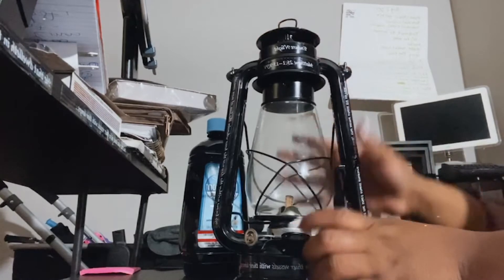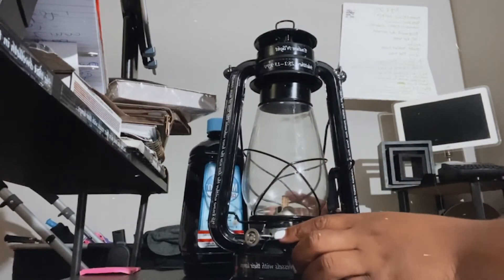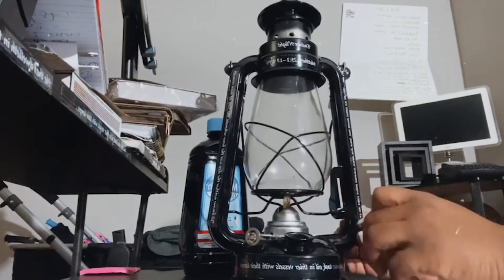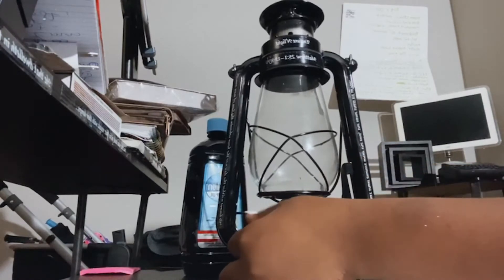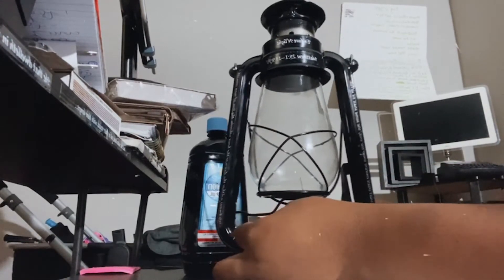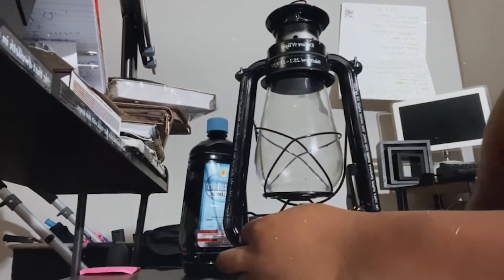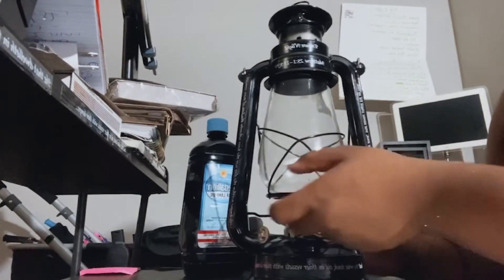And now it's time to light our lamp. So we'll expose the wick again. You want your wick to be very low when you light it because it will give off a big flame.